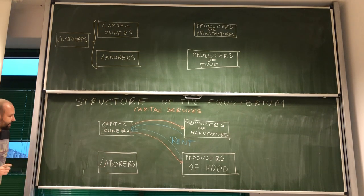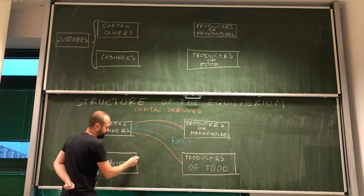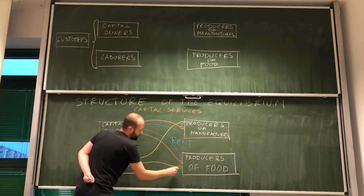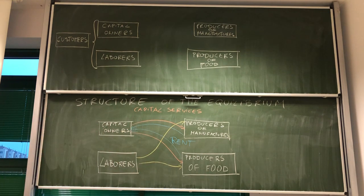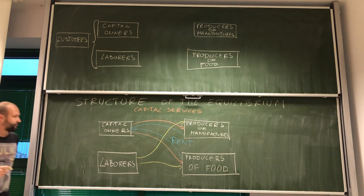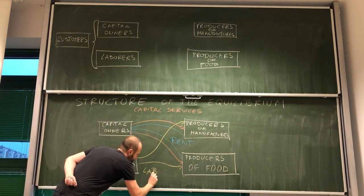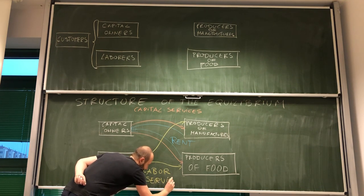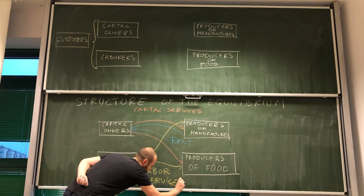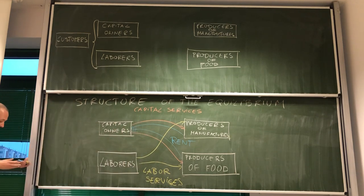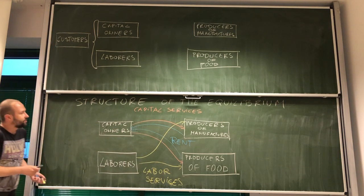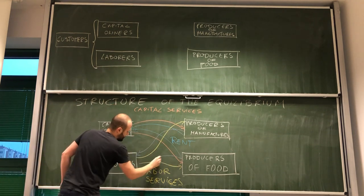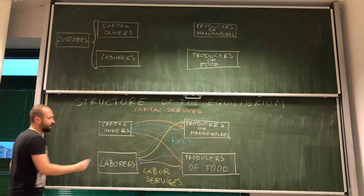And by the same token, we can see that laborers provide labor services for producers of manufacturers and producers of food. What they are getting in return? Well, in return for their labor, they are receiving wage.